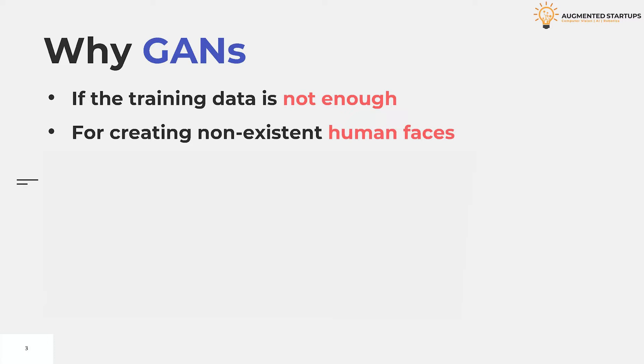From the given distribution. GANs can generate images from descriptions — text to image synthesis.